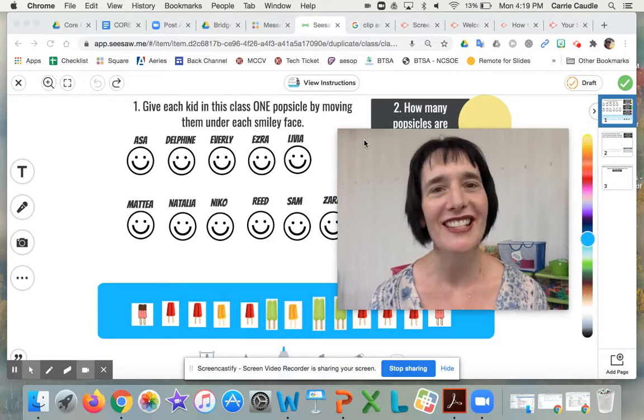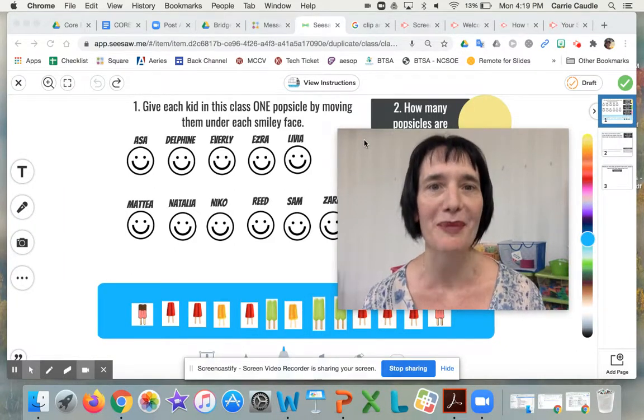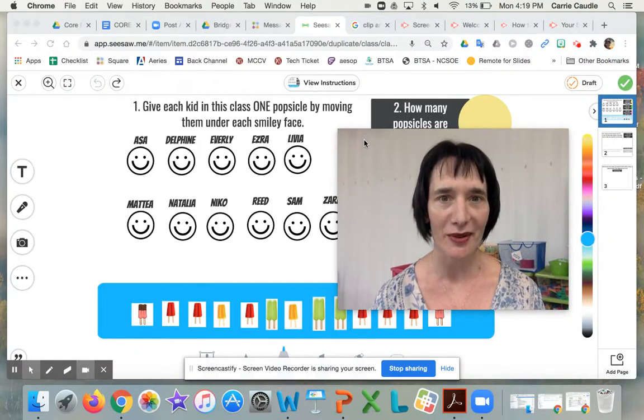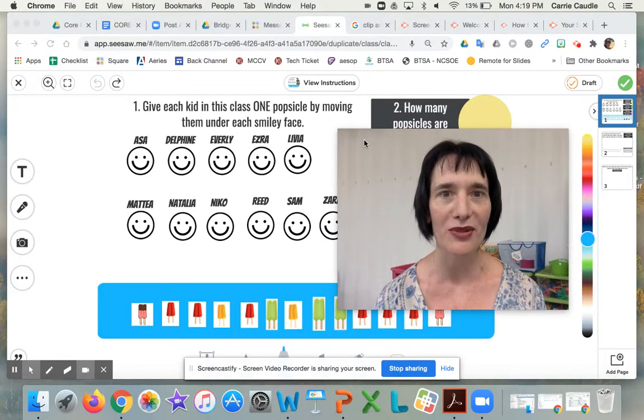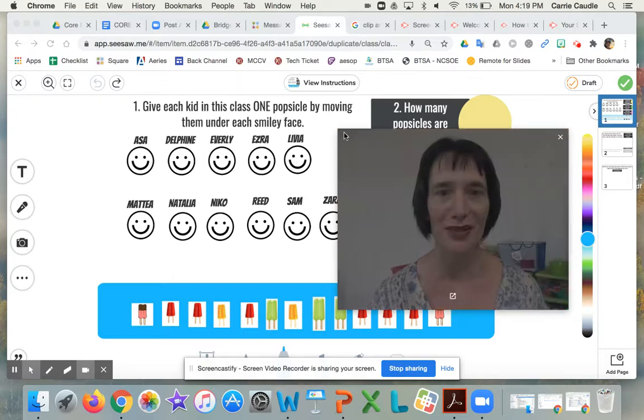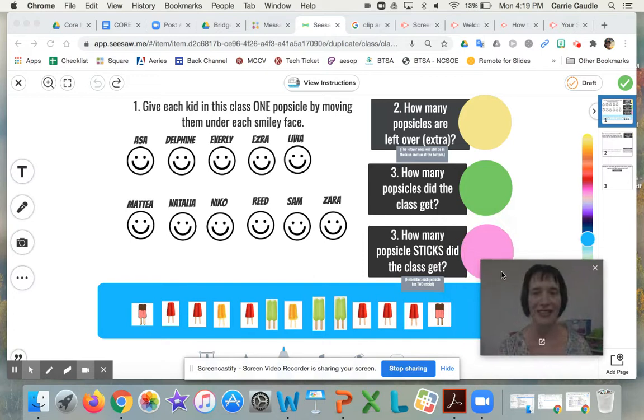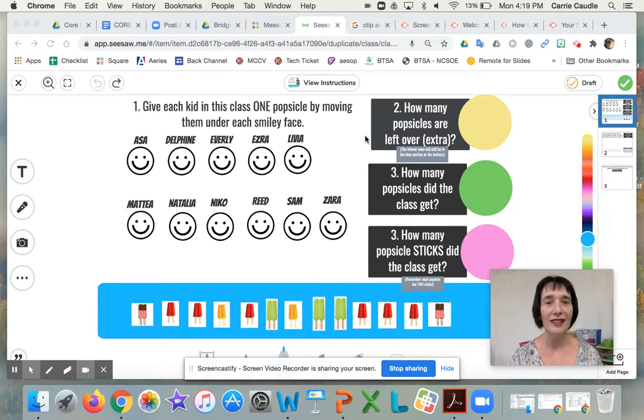Hi there, welcome to your Seesaw activity for popsicles part two. This is what the student template is going to look like, so I wanted to show you right in the middle of the template how to do what you're going to do. Let me make my face a little bit smaller and I'll put it down here kind of out of the way. When you click onto the student template, you're going to be over here on page one.